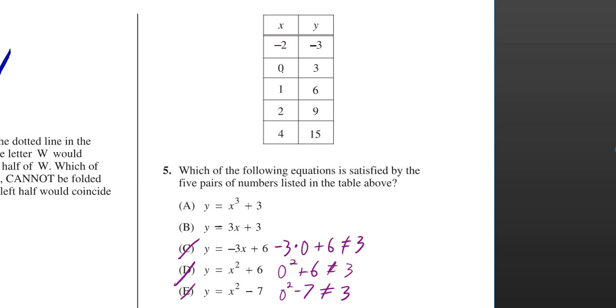What about when you plug in 1 for x, the next easiest number to plug in, and then you're supposed to get 6. But for this one, you get 4. 1 cubed is 1, plus 3 is 4.